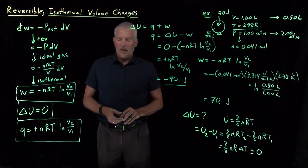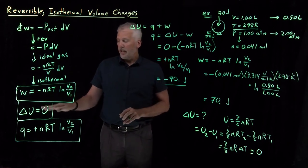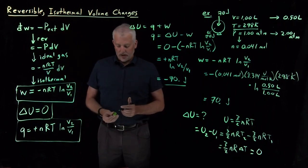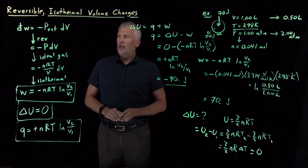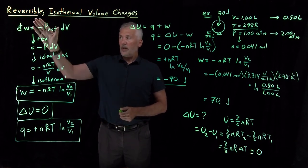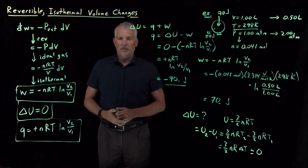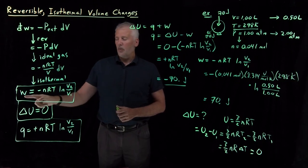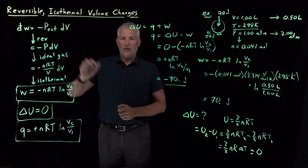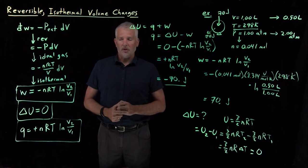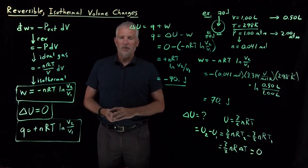That's the way to interpret the sizes and signs on these numbers. When I compress a gas isothermally, I do work on it and it transfers an equal amount of heat to the surroundings. We have those numerical results and the general equations we can use any time we have a reversible isothermal volume change. Next we'll look more closely at why the work done reversibly and isothermally differs from work done under other conditions.